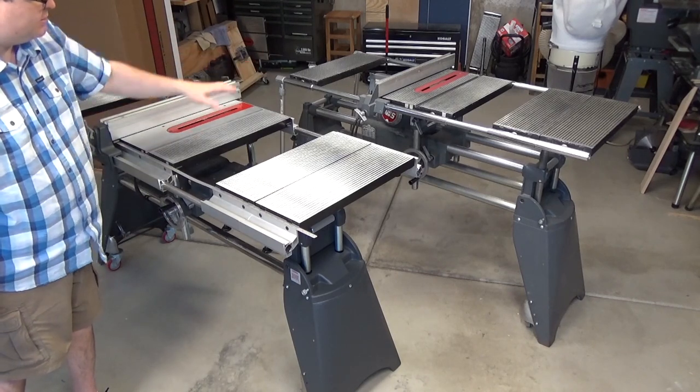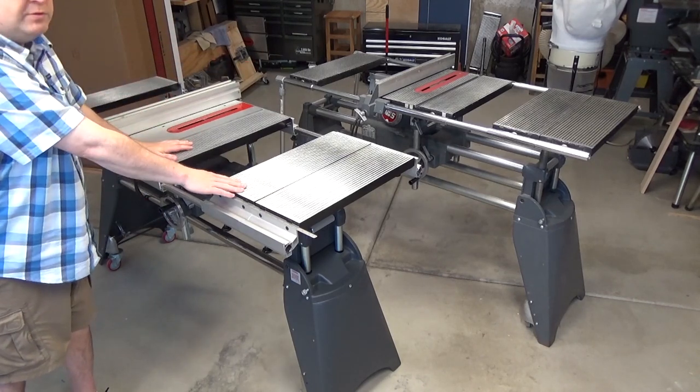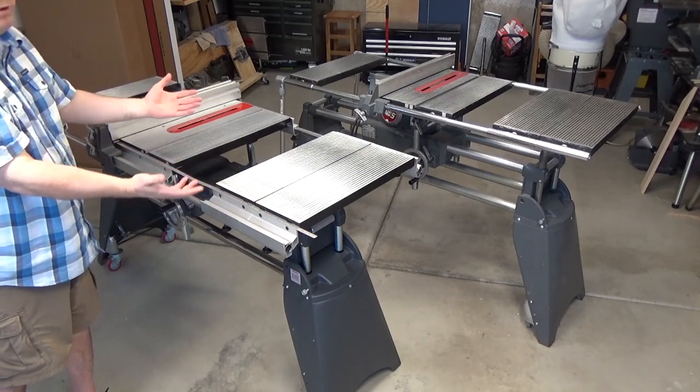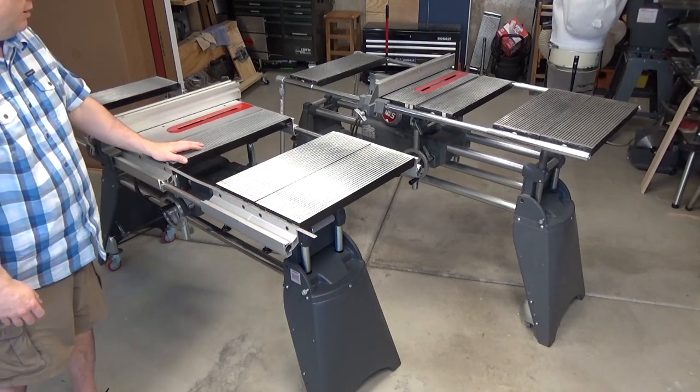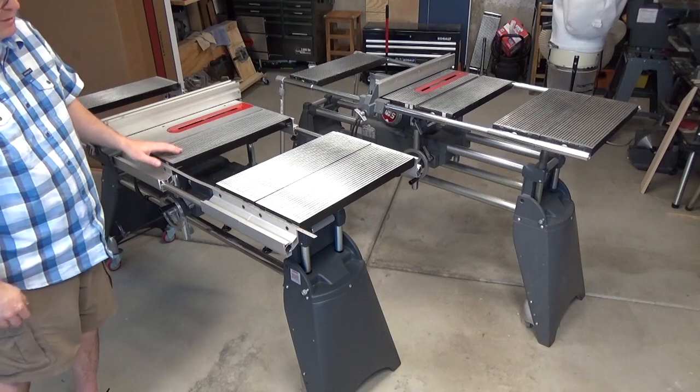Even though the Mk7 is brand new and the Shopsmith Mk5 is 30 plus years old, there are still quite a few similarities between the two, although some significant differences as well. Let's start the comparison with the table system.